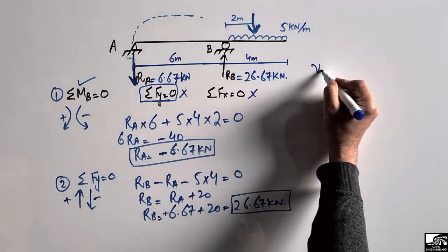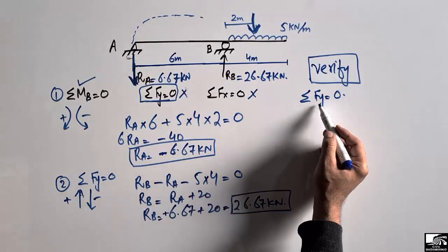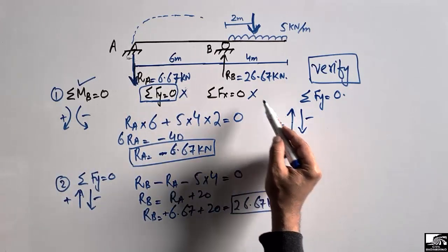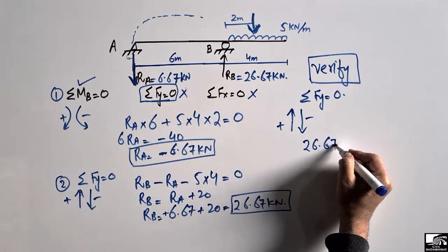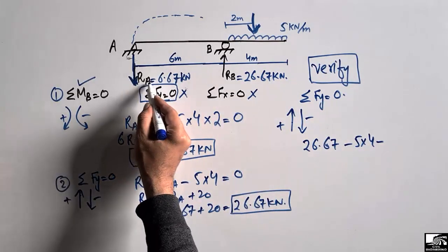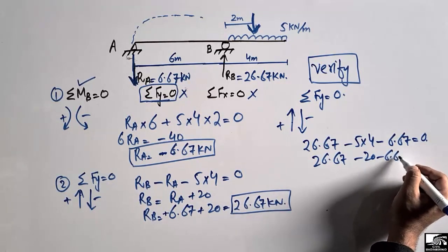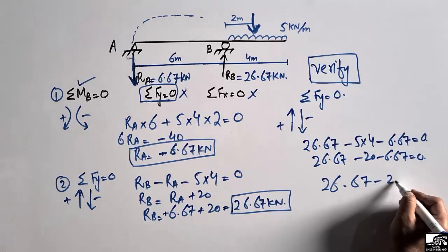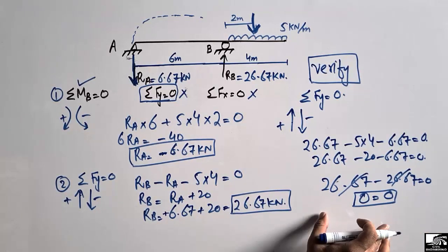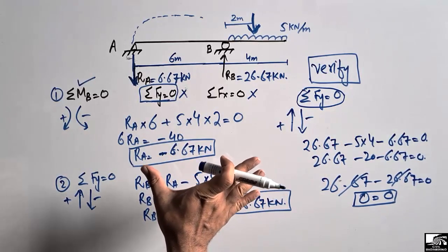To verify: taking upward forces as positive and downward as negative — upward force RB = +26.67 kN, downward distributed load = −5 × 4 = −20 kN, downward RA = −6.67 kN. Summing: 26.67 − 20 − 6.67 = 0. This confirms our support reactions are correct, as all forces are in equilibrium.